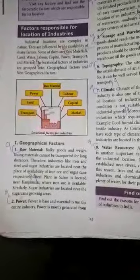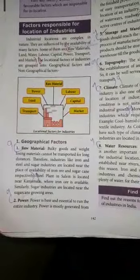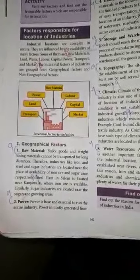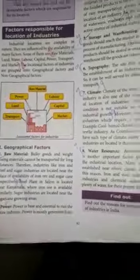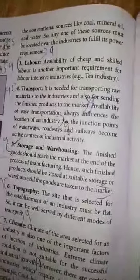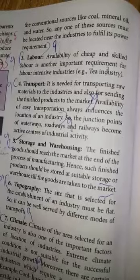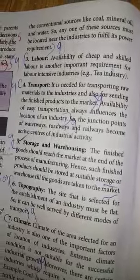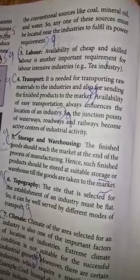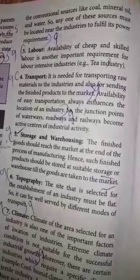Power is a basic and essential requirement to run the entire industry. Power is mostly generated from conventional sources like coal, mineral oil and water. So any one of these sources must be located near the industries to fulfill its power requirement.